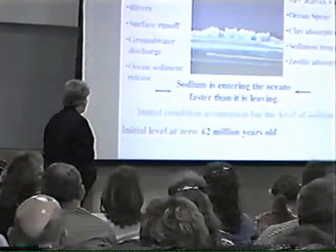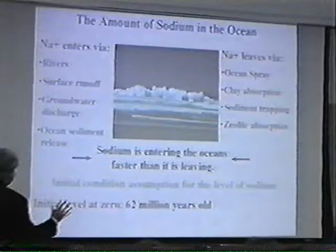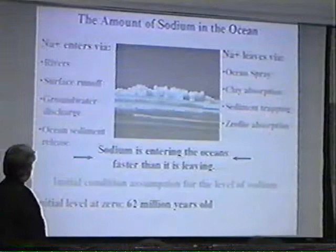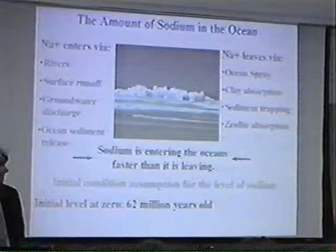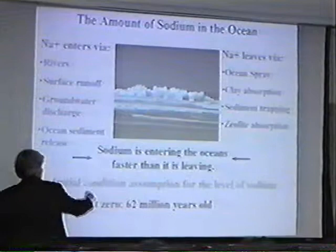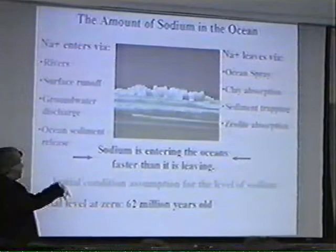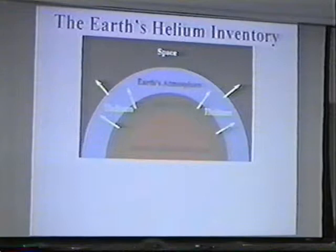If we assume these processes of sodium entering and leaving have built up the level of sodium that's there today starting from zero, then the ocean can't be any more than 62 million years old. The problem is our assumptions — we have no idea whether the level of salt in the ocean was zero initially, or whether these rates have stayed constant over that 62 million year period. But this might be considered an upper limit: if the ocean started out with some salt, it would take less time to reach current levels.